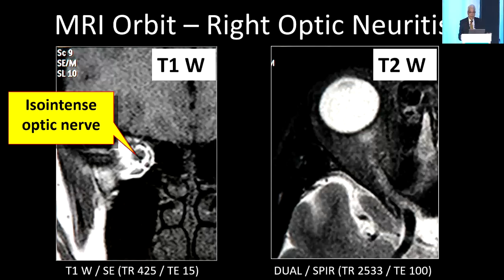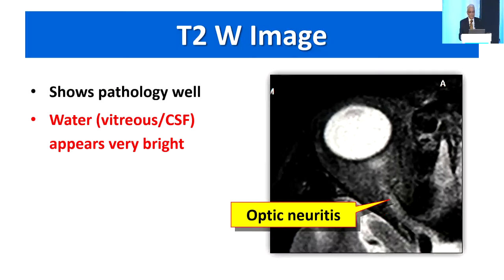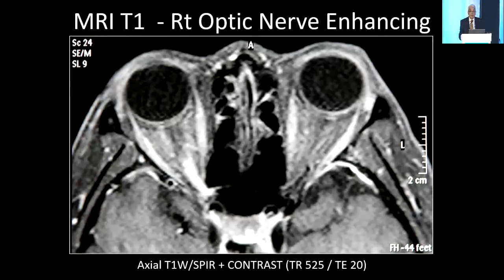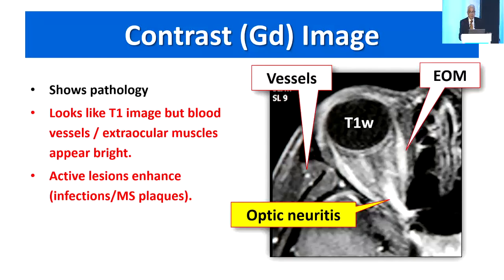Here is a patient with right optic neuritis. The T1-weighted image shows an iso-intense optic nerve, but on T2 you can clearly see the hyperintense optic nerve — so T2 is very useful for showing pathology like optic neuritis. In the same patient after contrast injection, the vitreous is dark confirming it's a T1-weighted image. We use contrast on T1 images only, and you can see the nerve enhancing with gadolinium. Blood vessels appear as little dots, and extraocular muscles also look very bright.